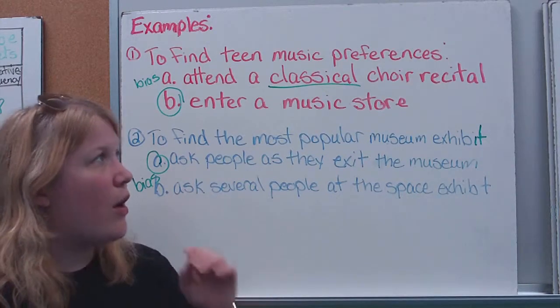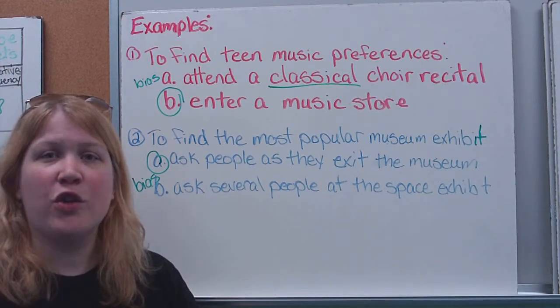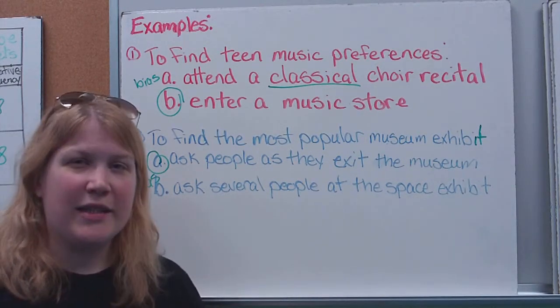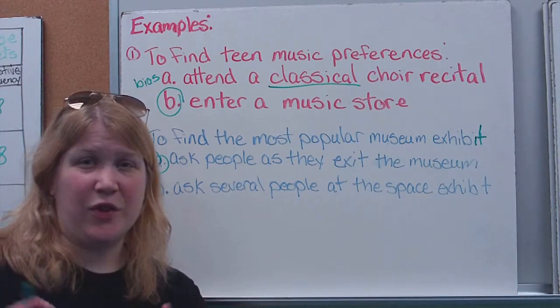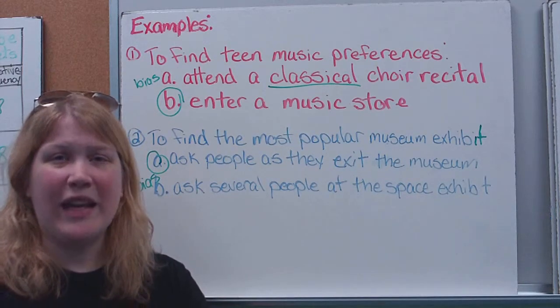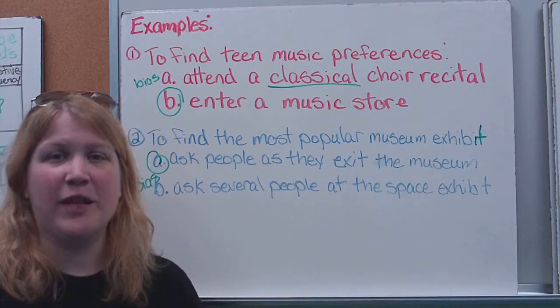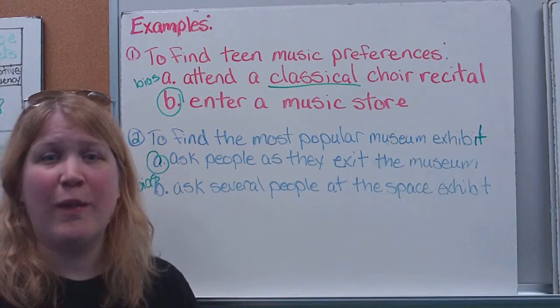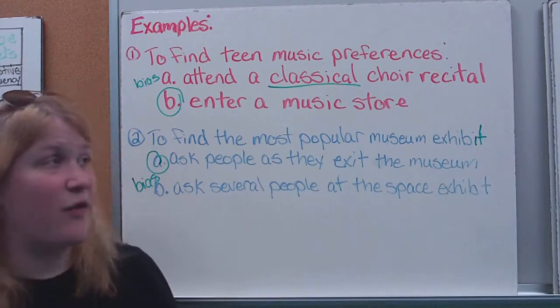So, those are things you want to think about when you're talking about your sample and how you're going to choose your sample. You really want to examine, is this a biased sample? Are these people going to have a certain preference already? Or am I getting a truly random sampling? Because we want it to be representative because what we want to use that data for is to make predictions based on the information that we have.